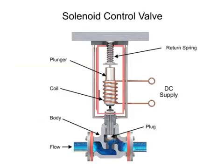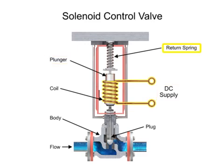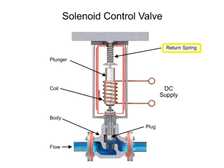For on-off control of the valve, a solenoid is used to actuate the valve to a fully closed or fully open position. Applying current to the coil generates a magnetic field that moves the plunger downward against the return spring. With zero current applied to the coil, the spring pulls the plunger upward to the fully open position for a normally open state control valve.